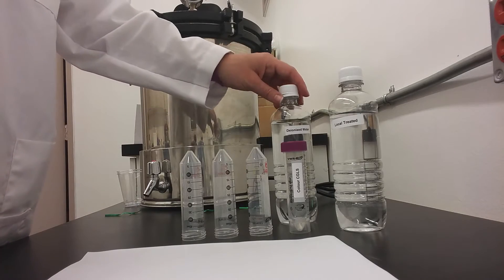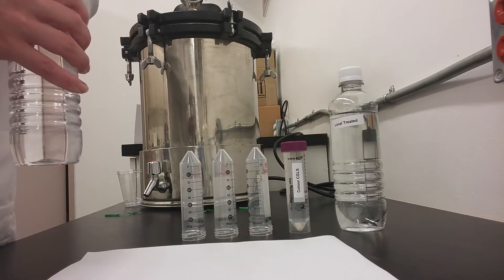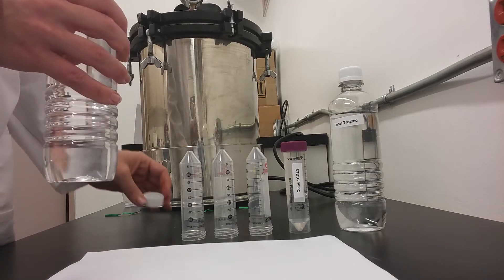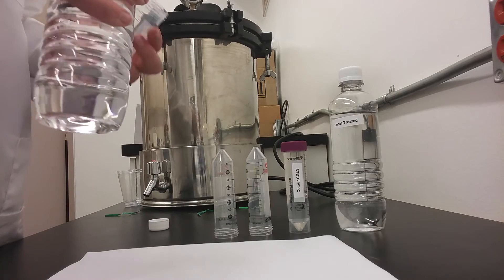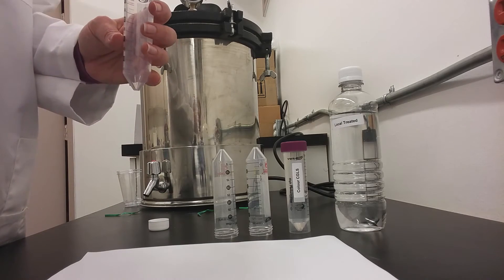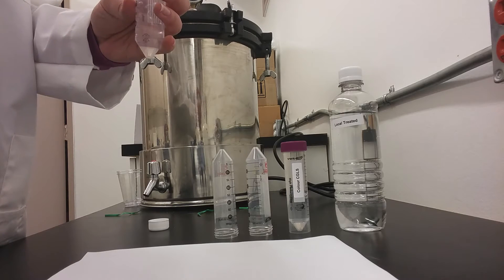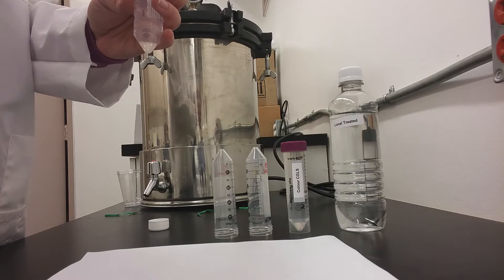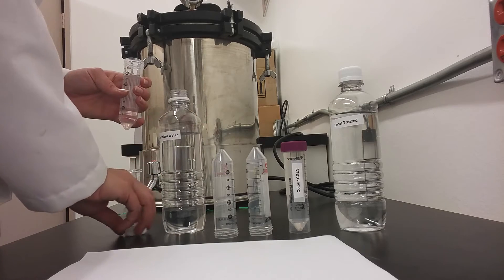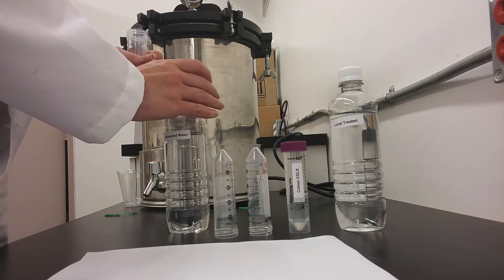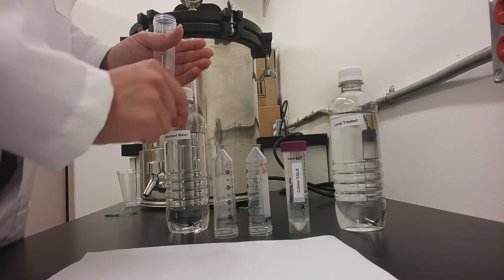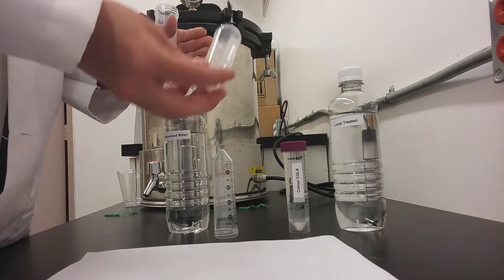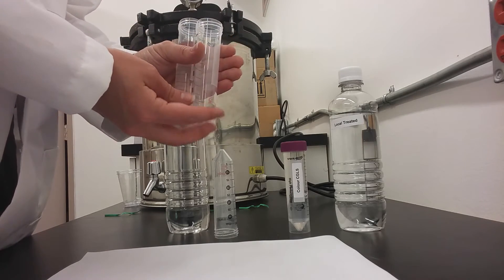To begin with, you will pour an equal amount of each kind of water into the tubes. The source sample that you are choosing to test should be in the middle of the other two tubes.